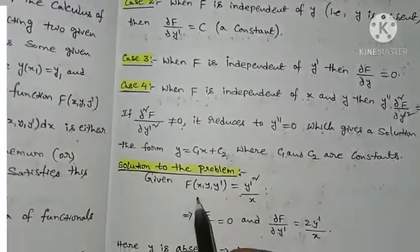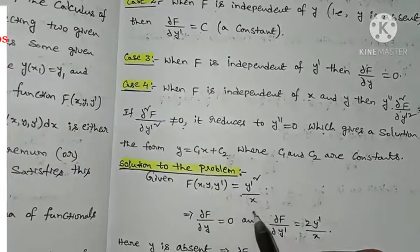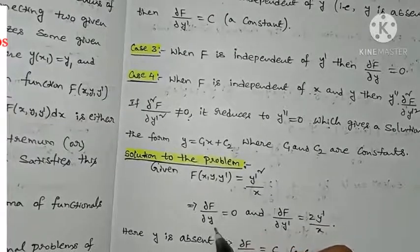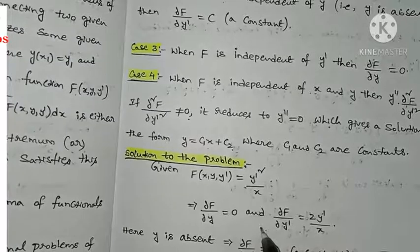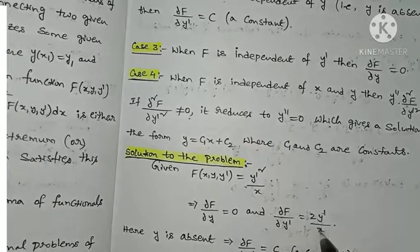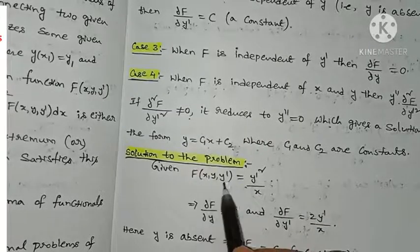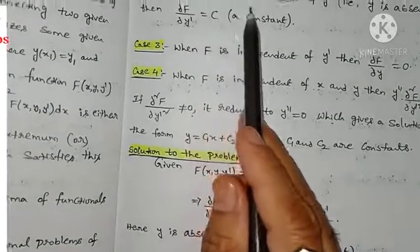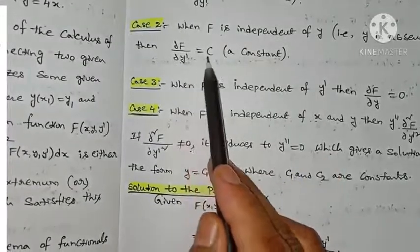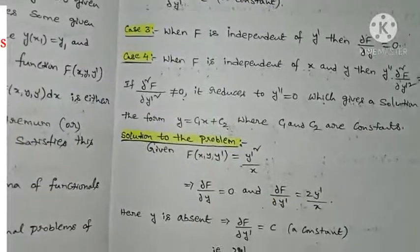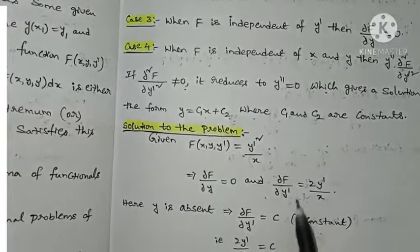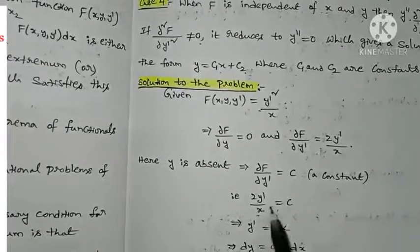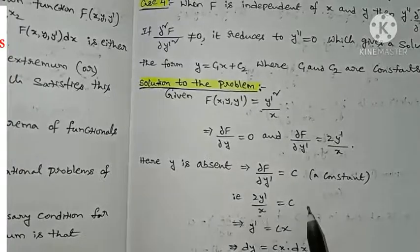Now coming to the solution of the given problem. Here F(x, y, y-dash) = y-dash² / x. We have ∂F/∂y = 0 and ∂F/∂y-dash = 2y-dash / x. Observe that in the given function y is absent, so we use Case 2: ∂F/∂y-dash = c, a constant. Therefore 2y-dash / x = c, which simplifies to y-dash = cx/2, where c is a constant (absorbing the factor into the constant).